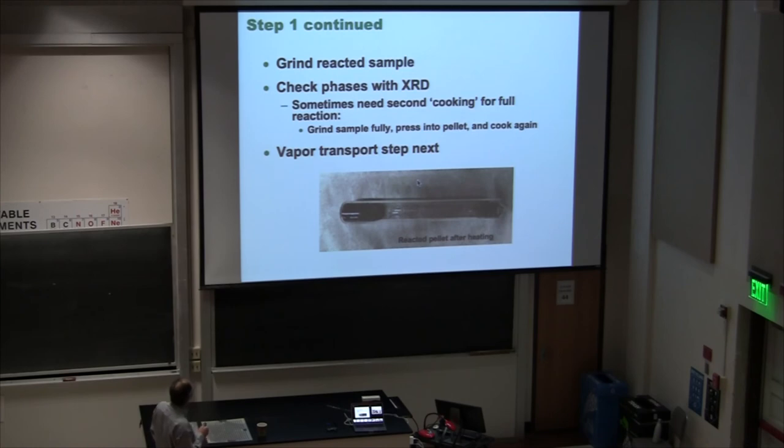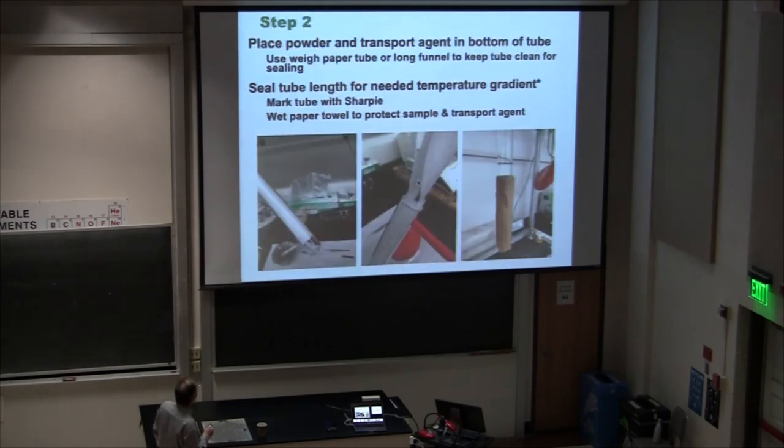She did a lot of prep work, making sure she had the right phase to start with. She found that being very important. You put your powder and your transport agent at the bottom of the tube. Another trick she has: you want to protect the walls of your tube. So the powder doesn't get onto the tube. If the powder is on the tube, when you go to seal it, it's bad. You want to protect the walls of your tube from getting powder on it. You can just pour your powder or your pellet down the tube. Your wet paper towel.